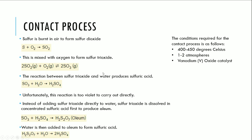The contact process makes sulfuric acid, so let's go through the steps. First, sulfur is burnt in air to form sulfur dioxide: sulfur plus oxygen gives sulfur dioxide. This is then mixed with oxygen to form sulfur trioxide — importantly, this is an equilibrium reaction, shown by the double arrow indicating both forward and backward reactions.